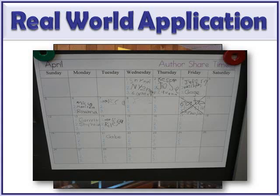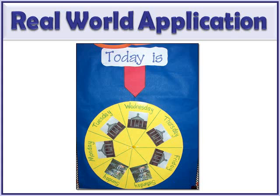One real-world application is to use a blank physical calendar rather than one on a smart board, which disappears when the board goes down. One teacher used this blank calendar for sharing time — students could sign up for different days of the week — which still builds in days, dates, and months of the year but with real-world application. Another real-world application is a circle model for the days of the week, where turning the circle shows that days are cyclical. This model has a house image on weekends and a school image on school days, so students see the cycle while still building concepts of yesterday and tomorrow in a more concrete way.